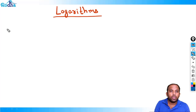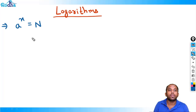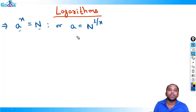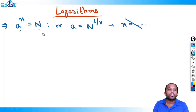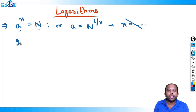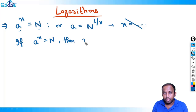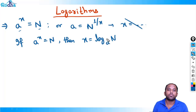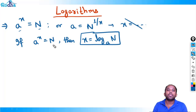Why was logarithm introduced? In mathematics, if we write a raised to x is equal to n, we can write a in terms of n, or n in terms of a — for example, a equals n raised to 1/x. But we can't write x equal to something directly, because x is in the power. So to write powers in terms of variables or numbers, we introduced logarithms. The meaning of logarithms: if a raised to x equals n, then we can always write x equals log n to the base a.